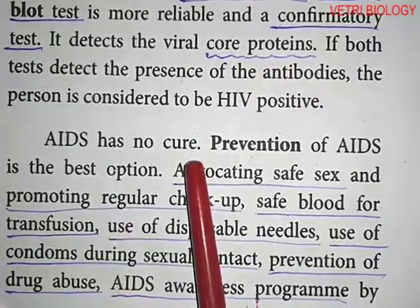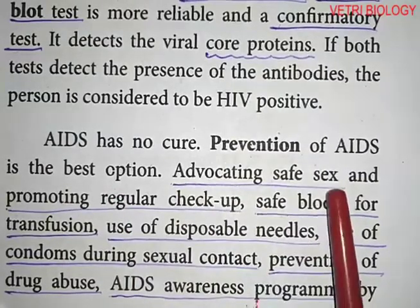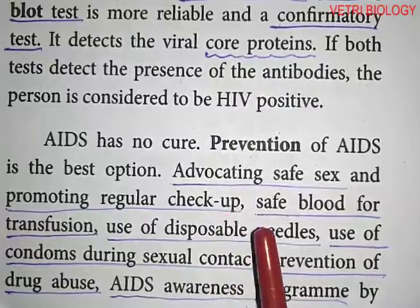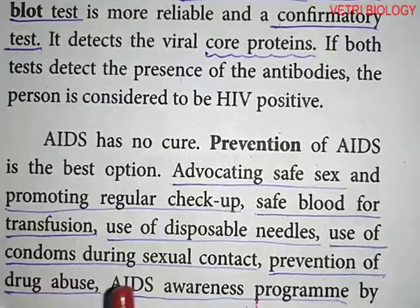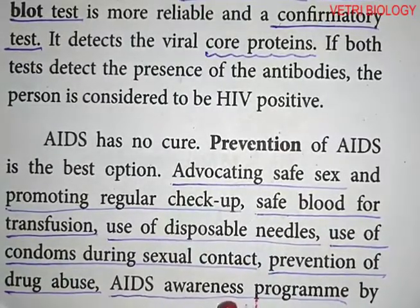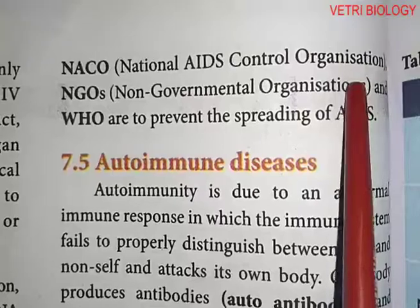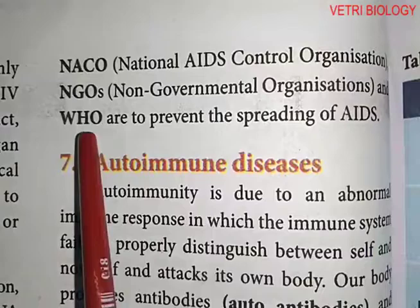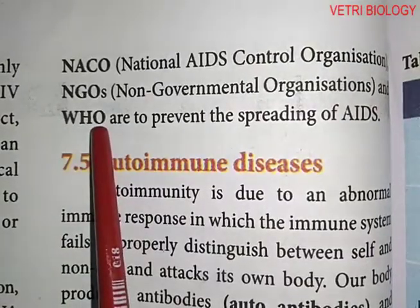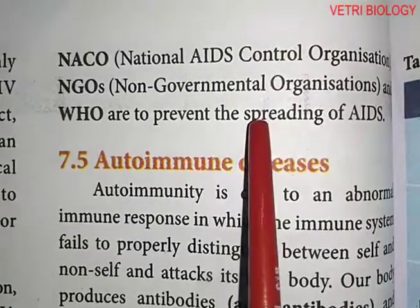AIDS has no cure, so prevention is the best option. Prevention methods include advocating safe sex, promoting regular checkups, ensuring safe blood for transfusion, use of disposable needles, use of condoms during sexual contact, prevention of drug abuse, and AIDS awareness programs by NACO — National AIDS Control Organization — NGOs — Non-Governmental Organizations — and WHO — World Health Organization.